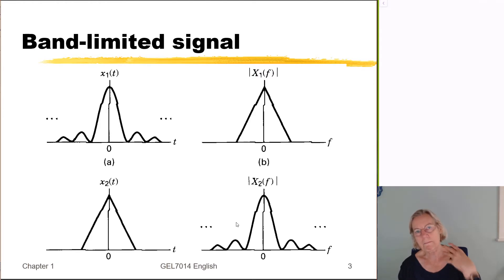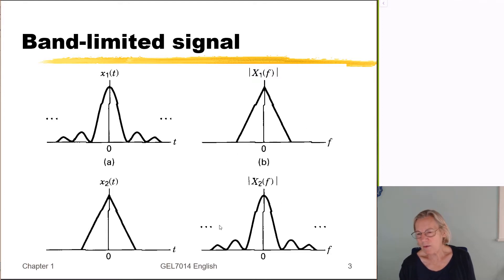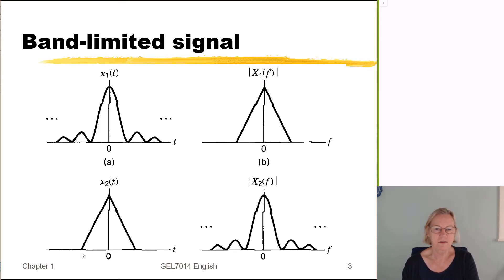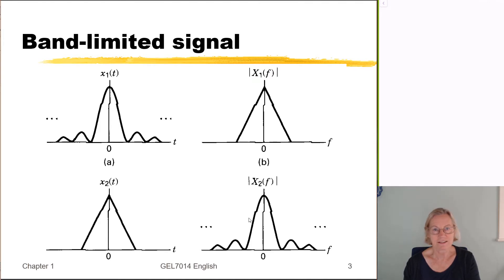If I wanted to talk about the bandwidth of a band-limited signal, it's quite clear. But how would I define the bandwidth of a signal whose spectrum never completely goes to zero? That's the challenge, because most signals of interest in communications start at one point and end at another — they're time-limited, which means they will not be band-limited. This motivates why we need alternate definitions of bandwidth.